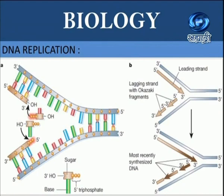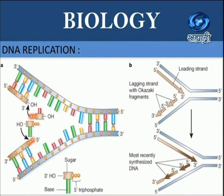These nucleotide molecules bind to complementary nucleotides on the template strand by forming hydrogen bonds — adenine pairs with thymine, guanine pairs with cytosine. The newly bound nucleotides get interconnected by phosphodiester bonds forming a polynucleotide strand. The synthesis of the new complementary strand is catalyzed by enzyme DNA polymerase. The new complementary strand is always formed in the 5' to 3' direction, that is from the fifth carbon atom to the third carbon atom.